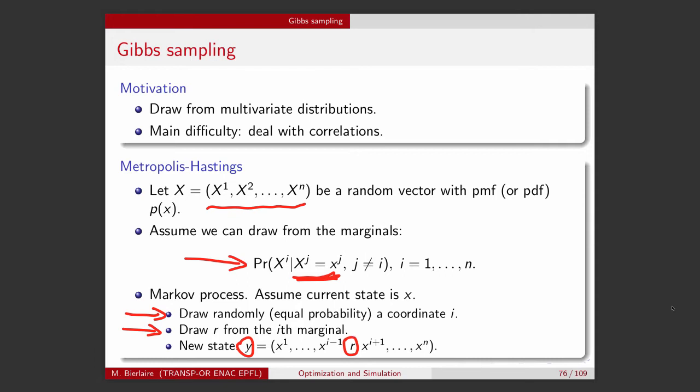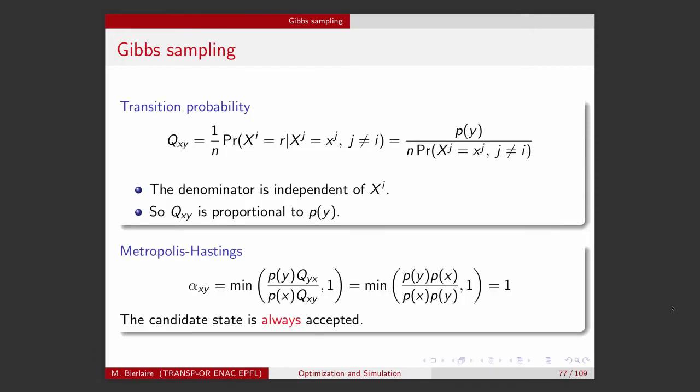Again, it's very simple, but we have now to calculate the forward and backward probabilities. So what is the probability that this process moves from state X to state Y? Well, first, you need the probability to select the proper coordinate, so it's 1 over n, and the probability to generate the r, given everything else is constant.